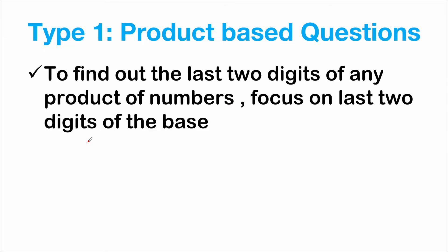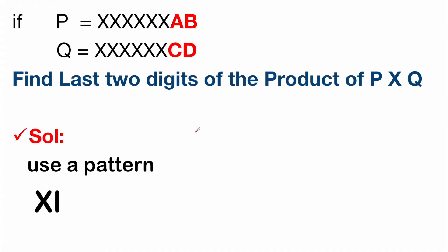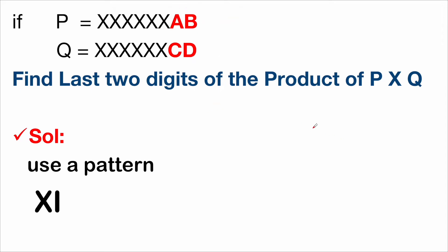Let's look at the first type — product-based questions. Whenever you have a product of numbers and want to find the last two digits of the overall result, you only need to focus on the last two digits of the given numbers. For example, if number P ends with AB and number Q ends with CD, just take the last two digits of each number and apply a simple pattern.